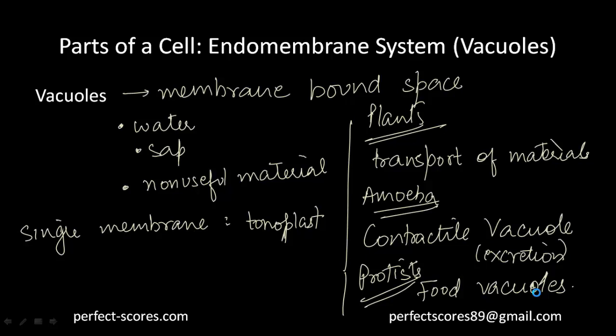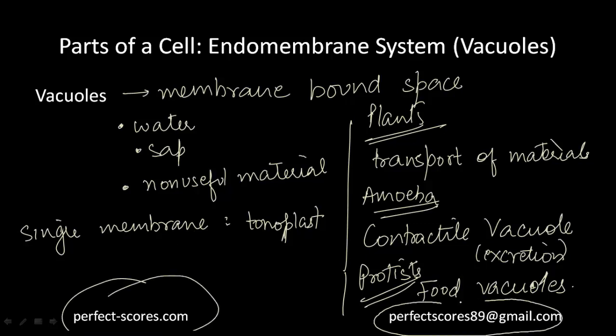That covers the first part of the eukaryotic cell structure. The remaining components — mitochondria, the nucleus, and plastids — will be covered in the next video. Thank you so much for watching, and don't forget to visit the website for more videos and to send any suggestions or feedback.